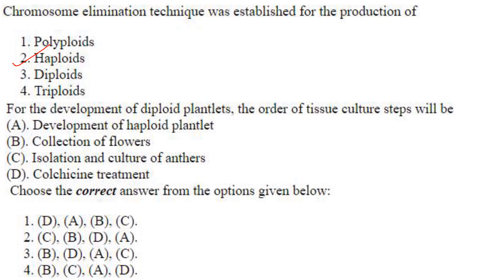For the development of diploid plantlets, the order of tissue culture steps will be: first, collection of flowers, B. Then isolation and culture of anthers, C. Then development of haploid plantlets, A. Then colchicine treatment resulting in diploids, D. So B, C, A, D — answer is option 4.